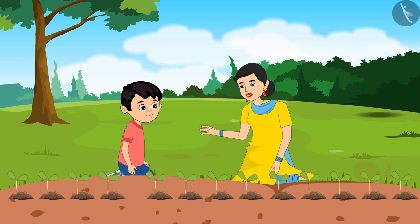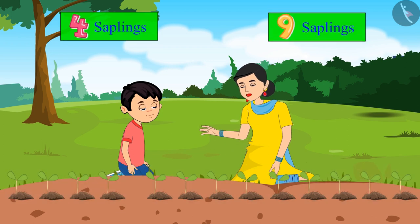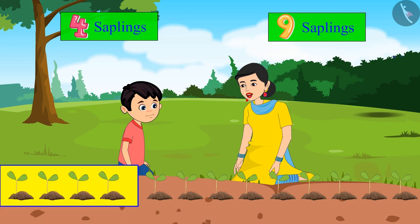No Chotu, not like this. Come on, now let us count the saplings all over again. Look, first of all you planted four saplings. After that I planted nine more saplings, and we already had four.